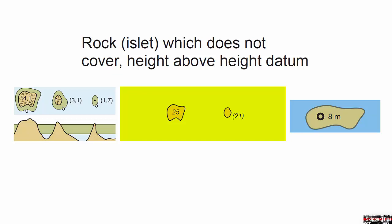And if not, they will put it in parentheses next to the symbol. All the way to the right, you can see how this symbol and abbreviation is shown on the latest Electronic Navigational Charts, or ENC.